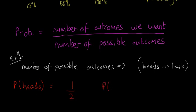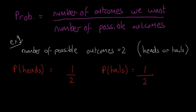The same logic applies to tails. P of tails: the number of outcomes we want is one, the number of possible outcomes is two, so P of tails is also one half. You might already know this since flipping a coin is a very basic example, but it's good to start simple before moving on.